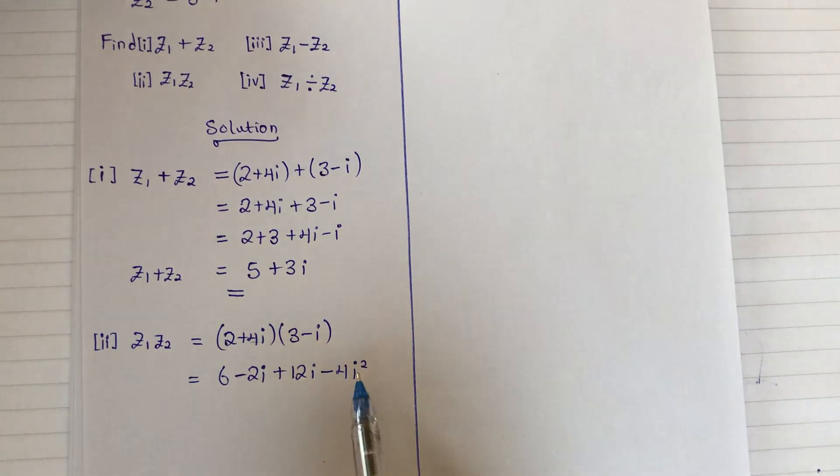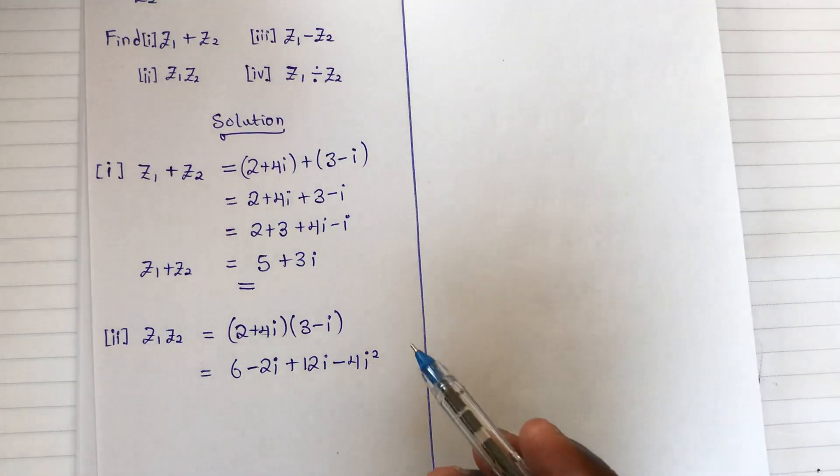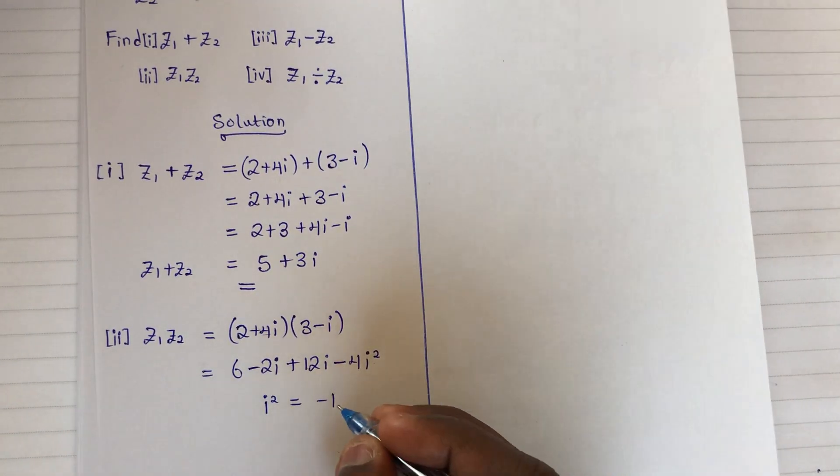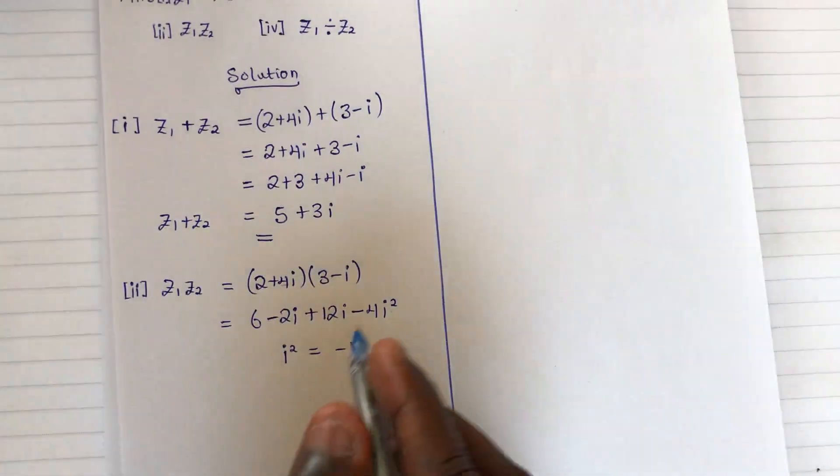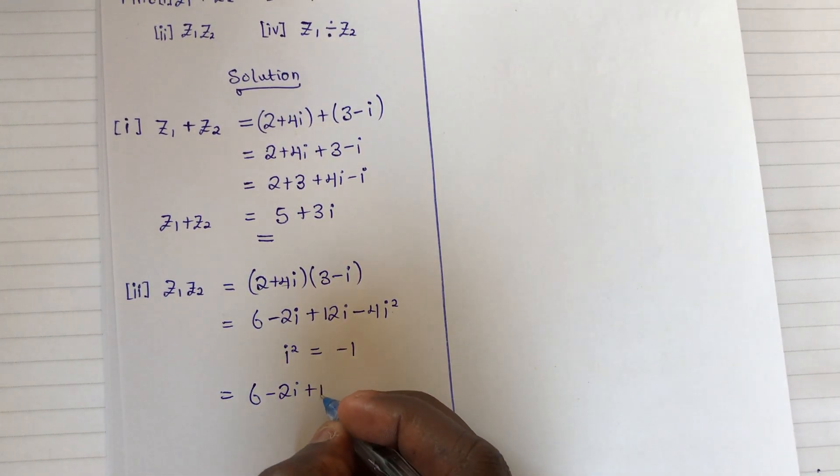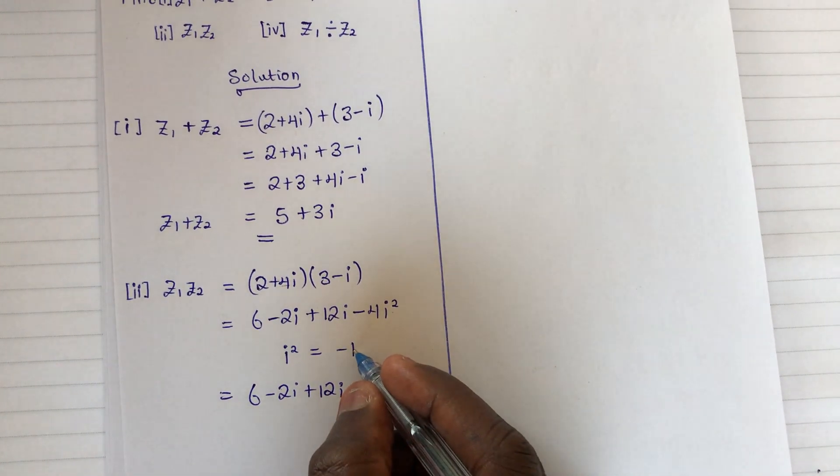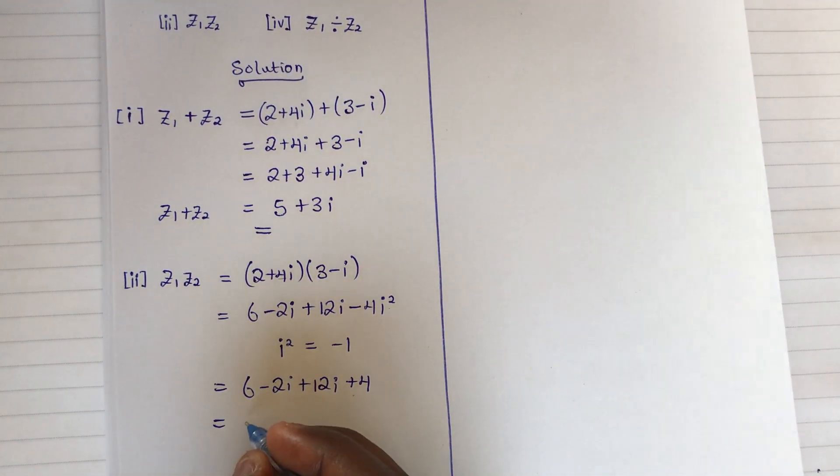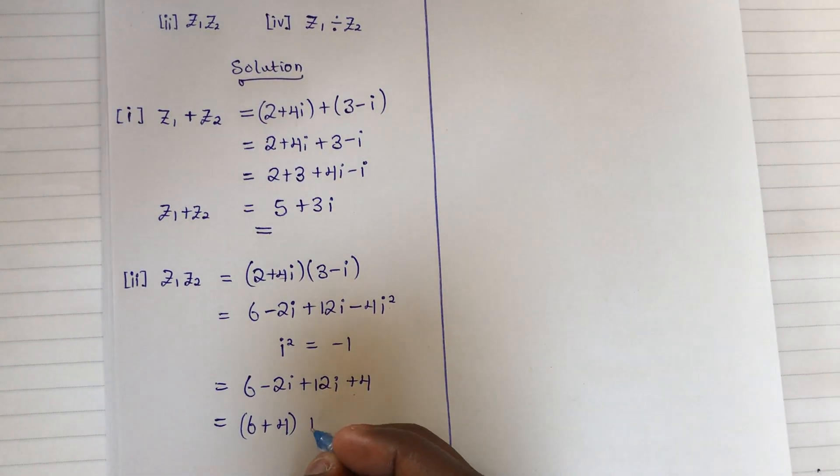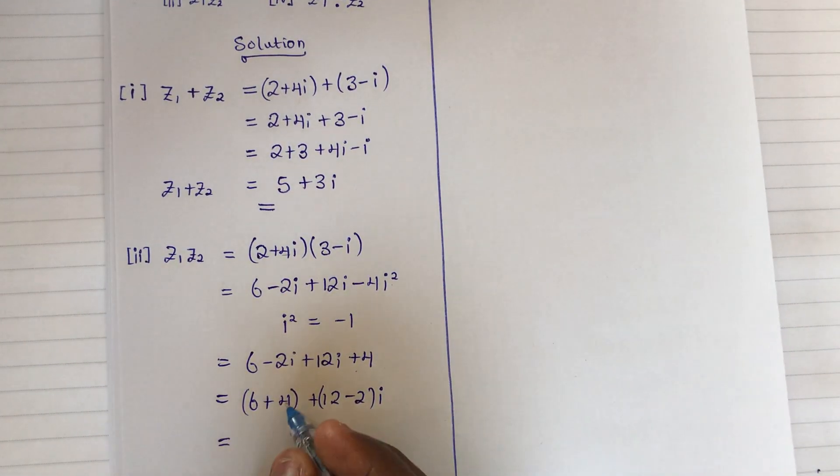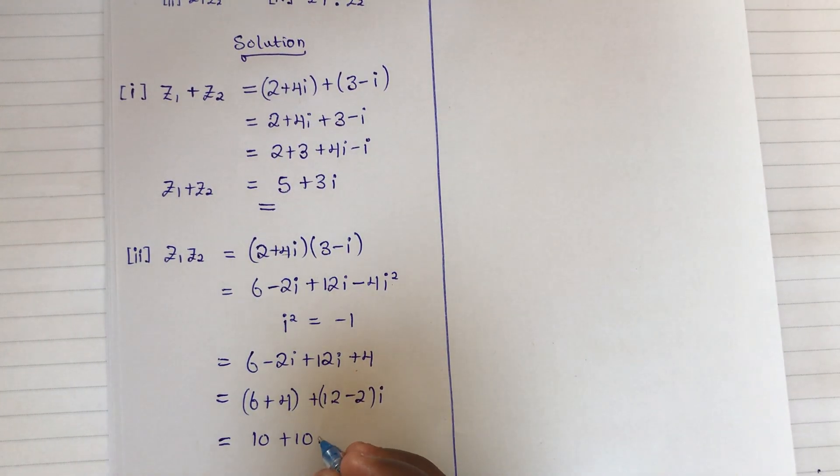Note that i² = -1, so we can substitute this into the result: 6 - 2i + 12i - 4i² = 6 - 2i + 12i + 4. Adding all real terms gives 6 + 4 = 10, and combining imaginary terms: -2i + 12i = 10i. Therefore z1z2 = 10 + 10i.